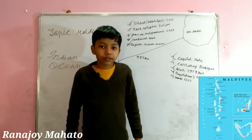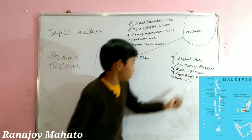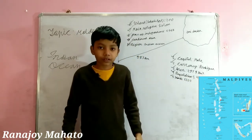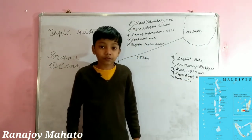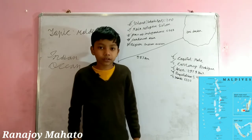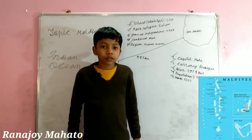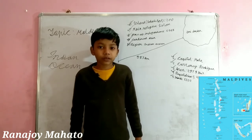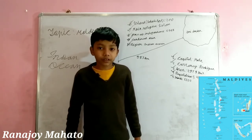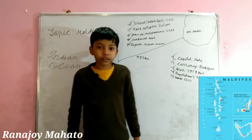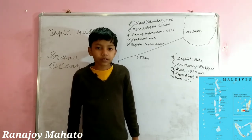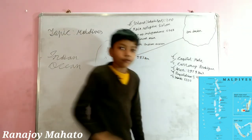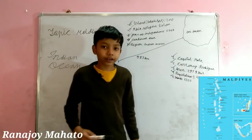What's the area of Maldives? It is 297.8 square kilometers. The fourth question is population: how many people are there in Maldives? Well, it is 5.41 lakhs — that's a lot of people in this tiny island nation.